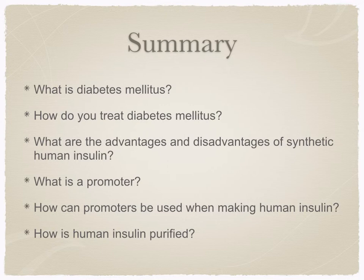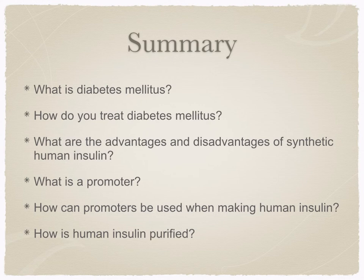Finally, we discussed how to separate human insulin from beta-galactosidase: treating the bacterial cells with lysozyme and detergent, then separating chain A and B from the beta-galactosidase using cyanogen bromide. These two chains are then mixed together so that disulfide bridges form between them. The final product is made of two chains — the A and B chain — and this can now be marketed. And that concludes our lesson.